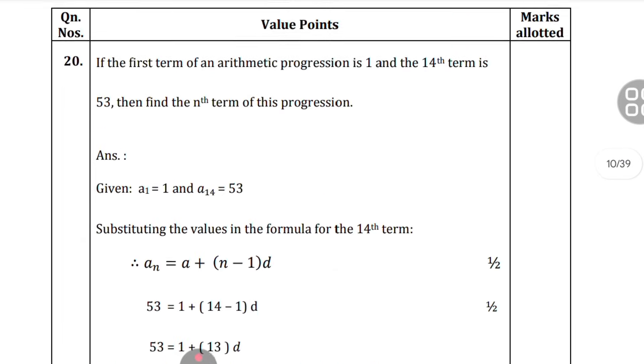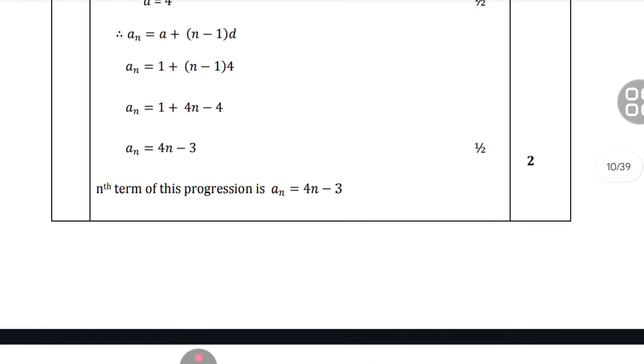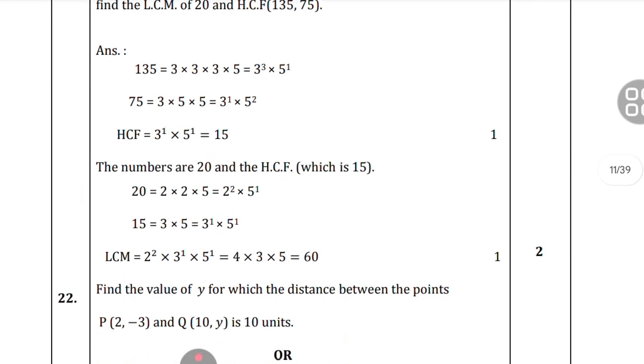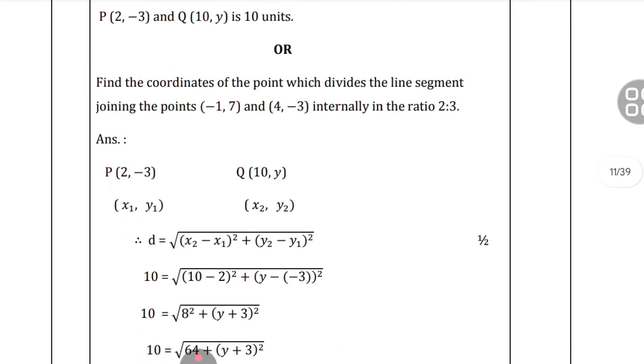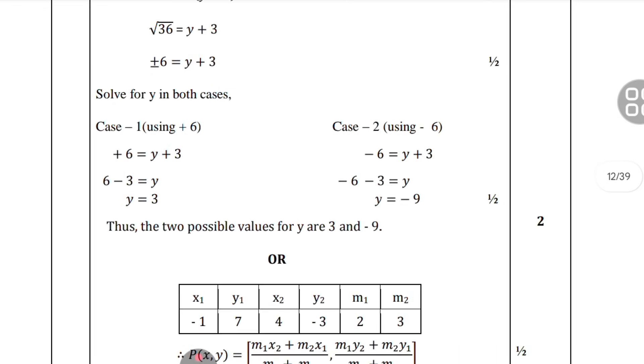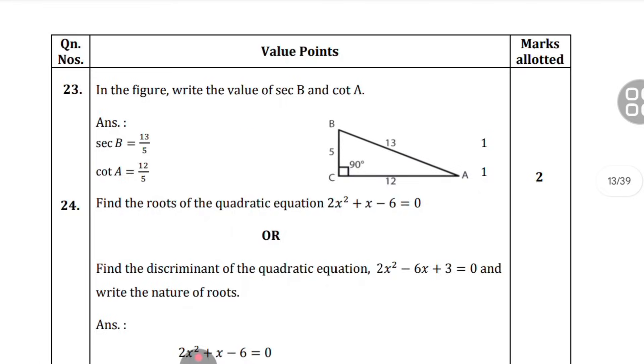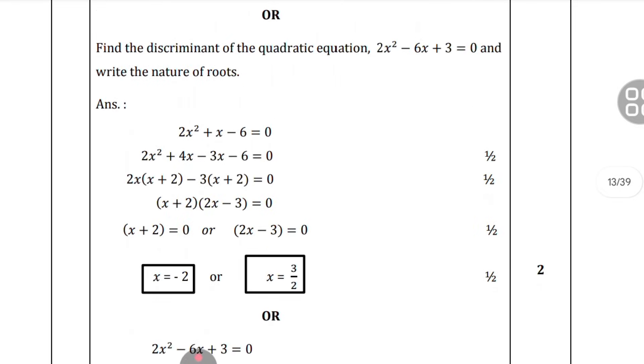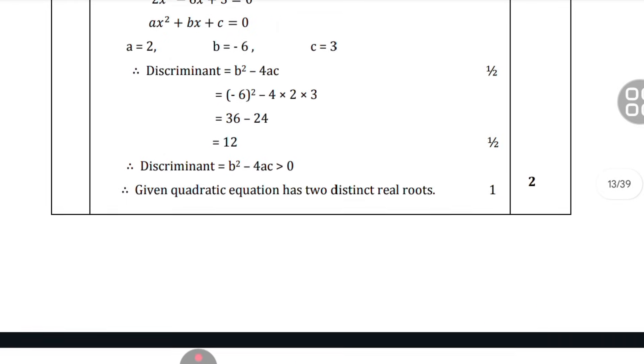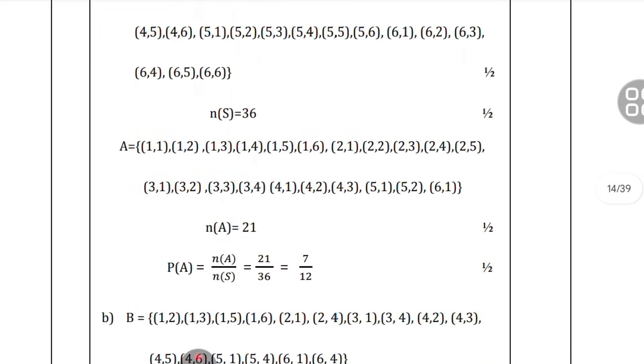If you write each point, you will get the half marks. This type of question they will ask: solve the given pair of linear equations by elimination method. If they have given elimination method, solve only by elimination method, don't use any other method. This is from arithmetic progression.